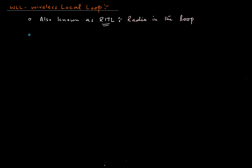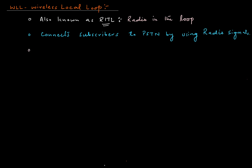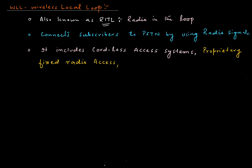WLL connects subscribers to PSTN by using radio signals. It includes Cordless Access Systems, Proprietary Fixed Radio Access Systems, and Fixed Cellular Systems.